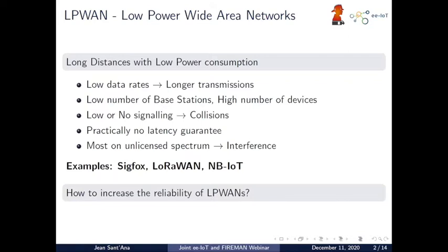Usually they have low to no signaling, so we're talking about random access, which means collisions. This kind of network practically guarantees no latency guarantees, so applications with latency requirements are out of their scope. Most of these networks work on unlicensed spectrum, which means you can get interference from other technologies or other networks with the same technology. Some examples are SIGFOX, LoRa, and 3GPP NB-IoT.